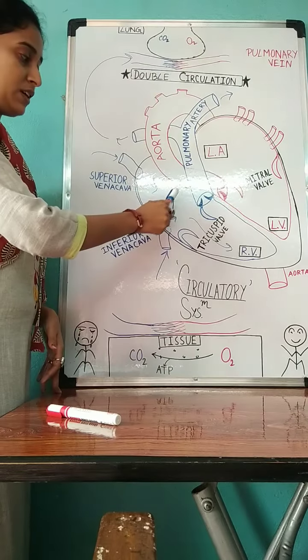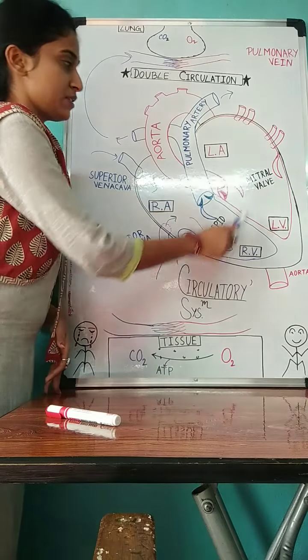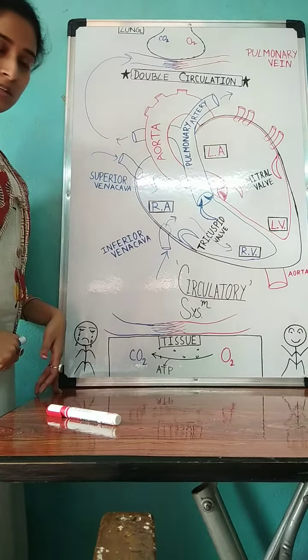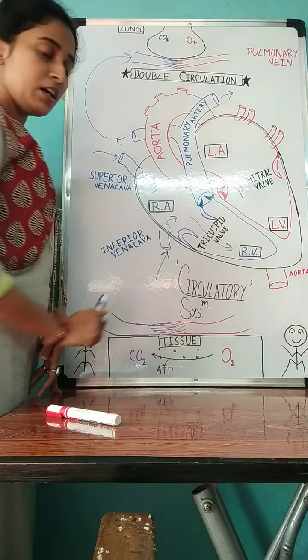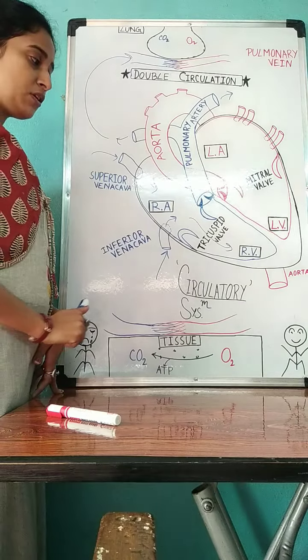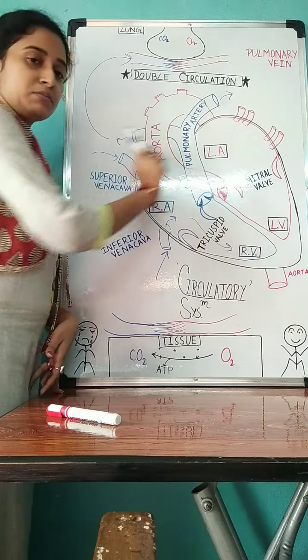And each side is further divided into atrium and ventricle. There are valves in between the atrium and ventricle to prevent the backflow of blood from ventricle to atrium.